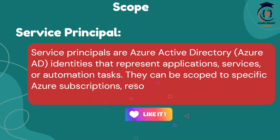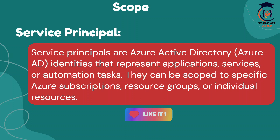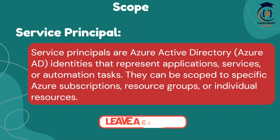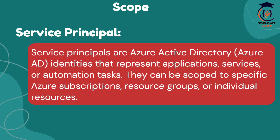We want to see the difference between Service Principal and Managed Identity in terms of three things. The first is scope. For scope, Service Principals are Azure Active Directory identities that represent application services or automation tasks. They can be scoped to specific Azure resources — at the subscription level, resource group level, or individual resources.